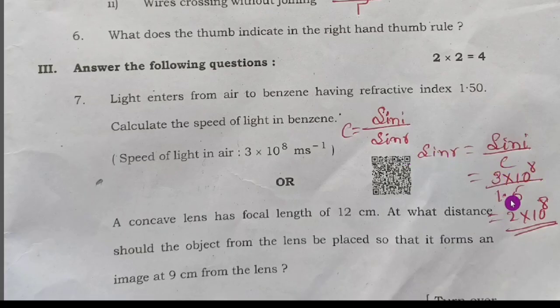So 3 into 10 to the power of 8 by 1.5, therefore 2 into 10 to the power of 8 meter per second. The answer is 2 into 10 to the power of 8 meter per second.